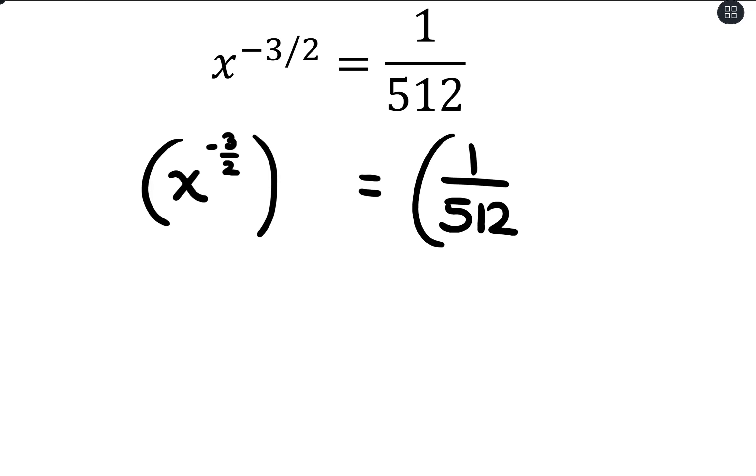So I have x to the negative 3 halves and then 1 over 512. I'm going to raise both sides to an exponent. Now, this time I have a negative, and we do want a result of positive 1. So that means the exponent I choose will also be negative. And then where I have 3 halves, now I'm going to do 2 thirds. So with that, x to the negative 3 halves times negative 2 thirds will give me x to the positive 1.